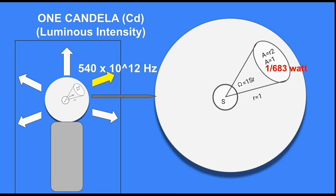is A equals r squared, and you get A equals 1. At this place the radiant intensity must be 1/683 watt, then we call it as 1 candela.